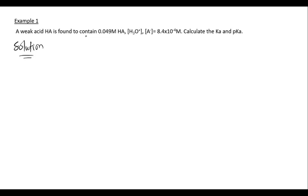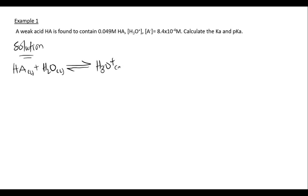For the solution, we first write the dissociation equation of the weak acid HA: HA (liquid) + H₂O (liquid) ⇌ H₃O⁺ (aqueous) + A⁻ (aqueous).